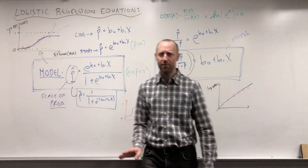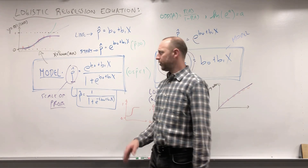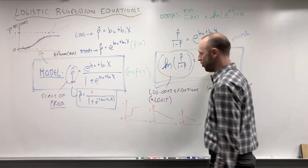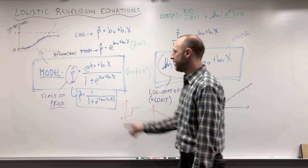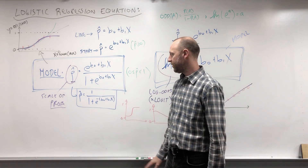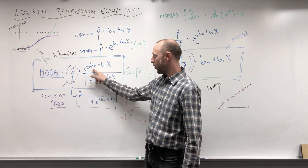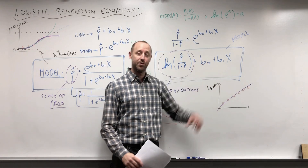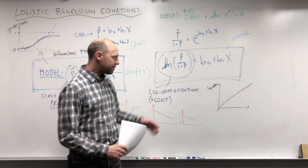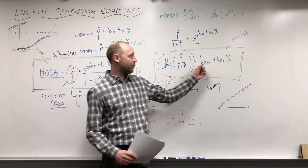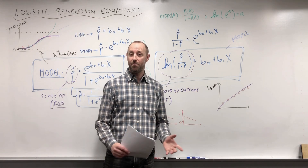One final thing: the way we choose the best-fitting line — how we determine the intercept, slope, and other coefficients — is through maximum likelihood or non-linear least squares. We won't get into that deeply in this course, but the same idea of choosing the best-fitting parameters applies. What we'll do next is fit this model in R, visualize the data on both the probability scale and the log-odds scale, then work with the numeric model output. Stay safe everyone, there's more to come.